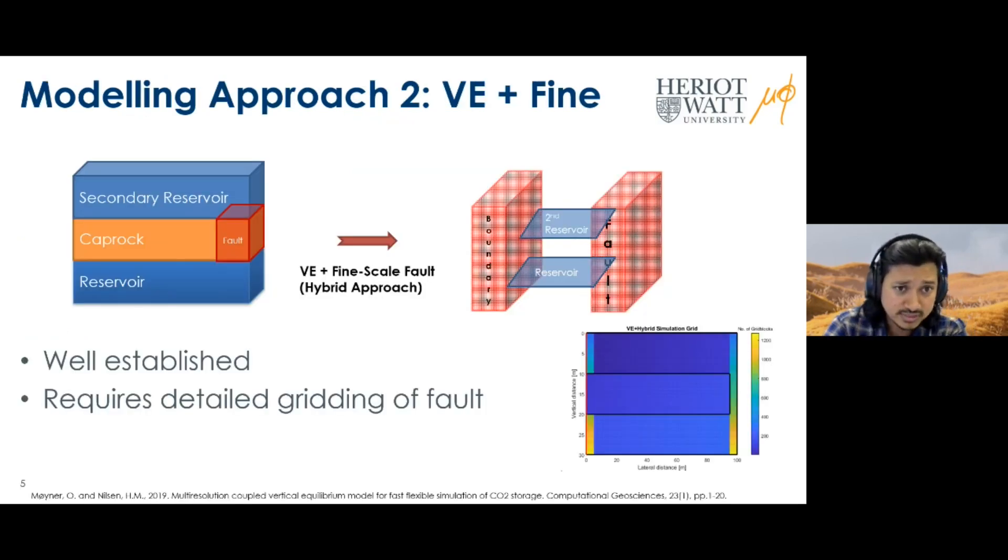The first approach is the vertical equilibrium plus fine scale grid approach. We're using the hybrid VE model developed by Olav and others. This approach takes advantage of both the VE and fine scale approach. At regions where horizontal flow dominates vertical flow, we can represent them using a VE grid like the middle sections. At regions with substantial vertical flow, like at the fault boundary, you can represent them as a fine scale grid problem. The original 12,000-grid problem has been reduced to a 1,200-grid problem, so you gain substantial computational advantage.